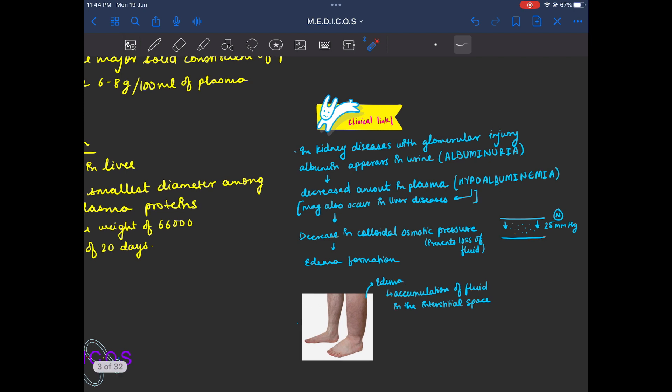If there is loss in urine, there is decrease in plasma. If there is albuminuria, then hypoalbuminemia occurs in plasma.